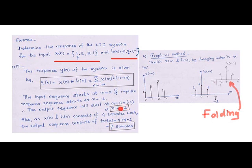Then we find out how many number of samples will be present in the output sequence by the formula as number of samples in x plus number of samples in h minus 1. For the present example it results into 7 samples.